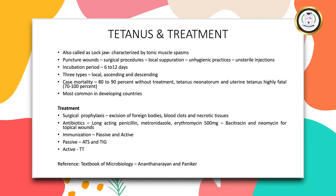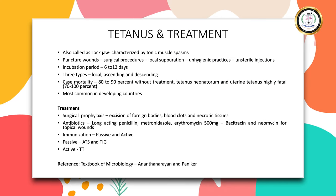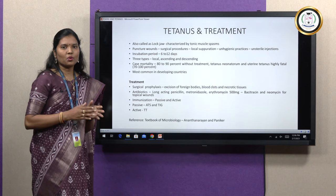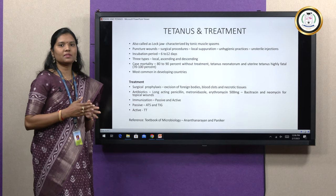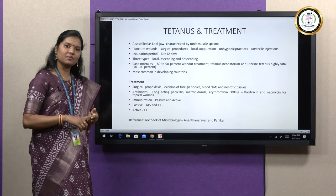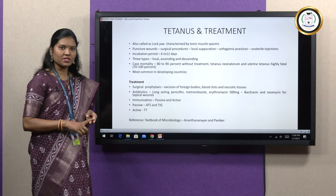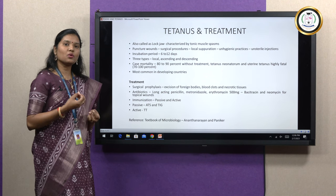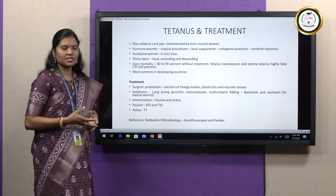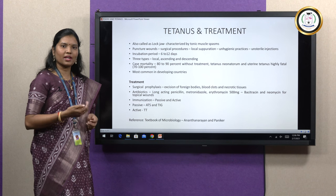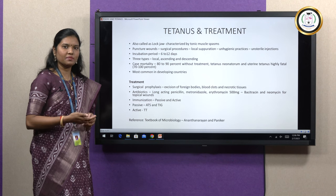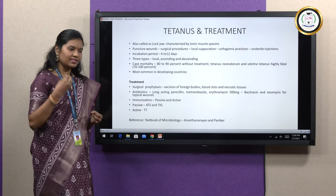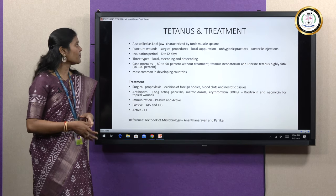Talking about the disease tetanus: tetanus is also called lockjaw and is characterized by tonic muscle spasms. We have two types of muscles — phasic muscles and tonic muscles. Tonic muscles are the background muscles; they are slow contracting muscles. When these muscles undergo cramps and spasms, that is the characteristic feature of tetanus.